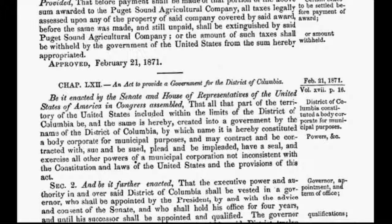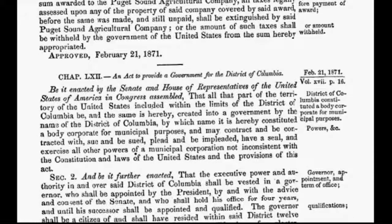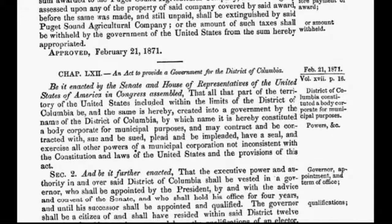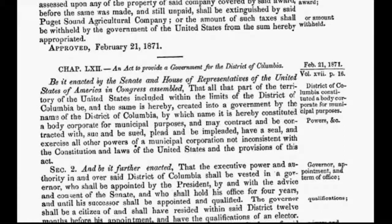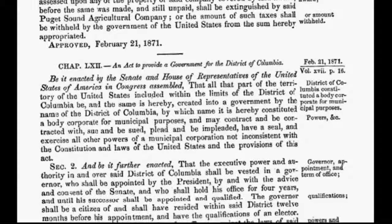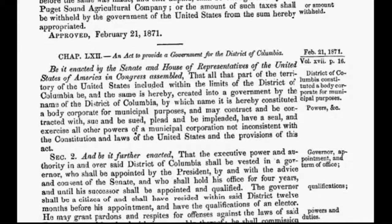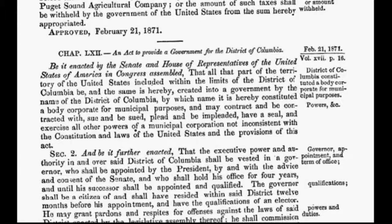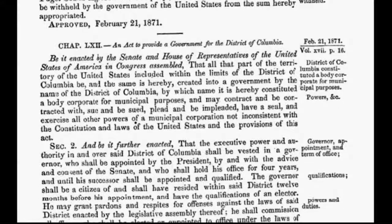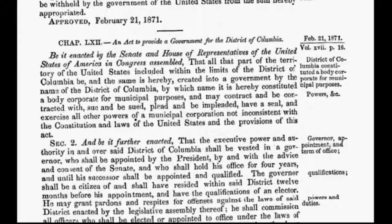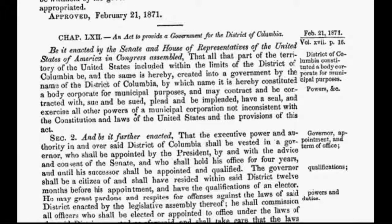Congress cut a deal with the international bankers, specifically the Rothschilds of London, to incur a debt to said bankers. Because the bankers were not about to lend money to a floundering nation without serious stipulations, they devised a way to get their foot in the door of the United States. The Act of 1871 formed the corporation called the UNITED STATES, all in capital letters — a corporation owned by foreign interests — and moved in and shoved the original constitution into a dustbin.